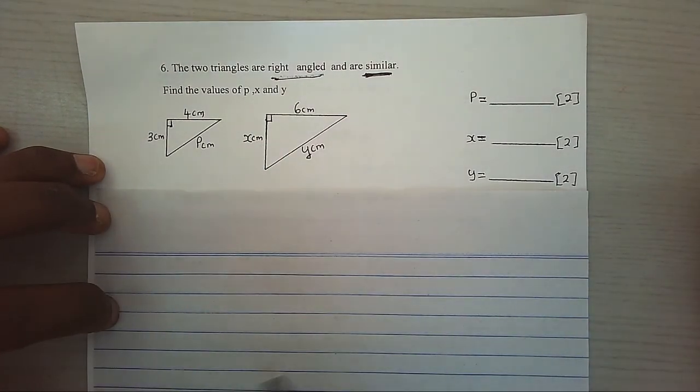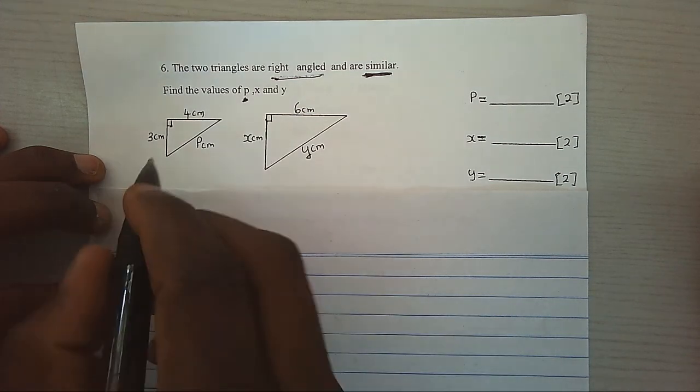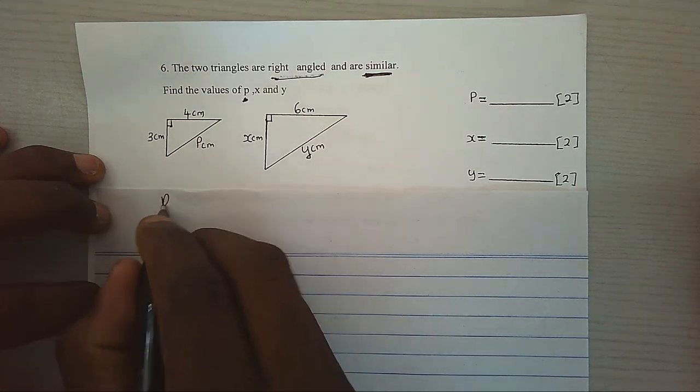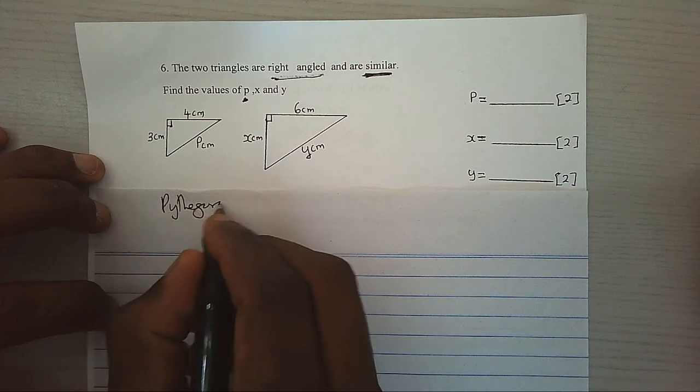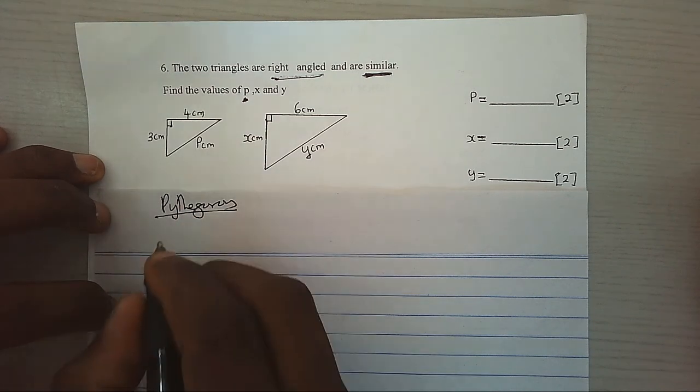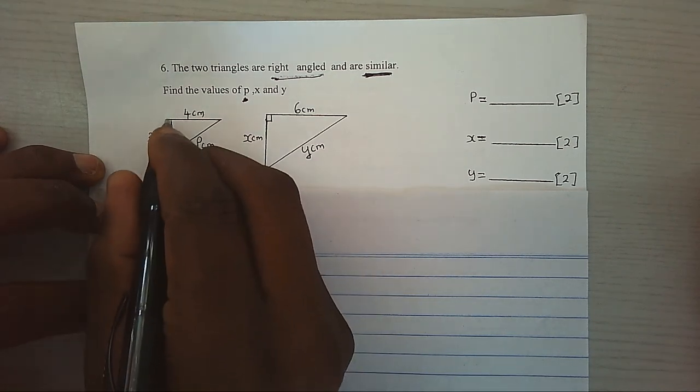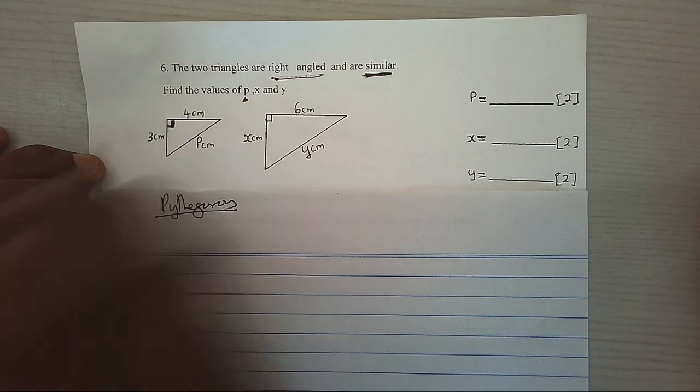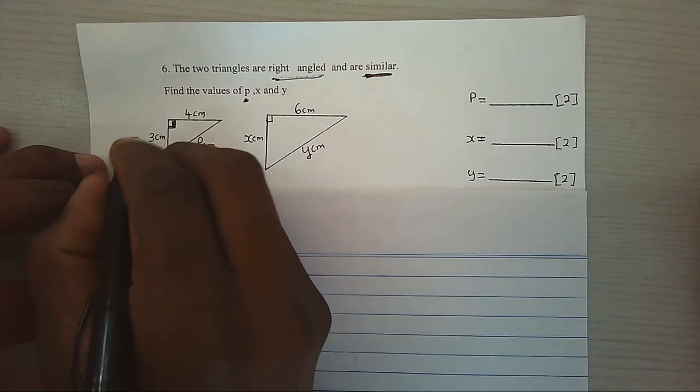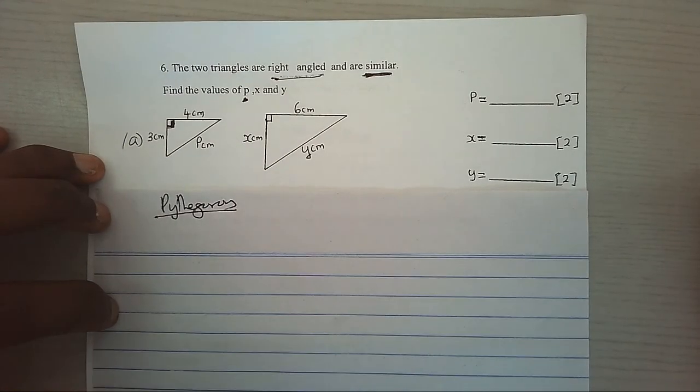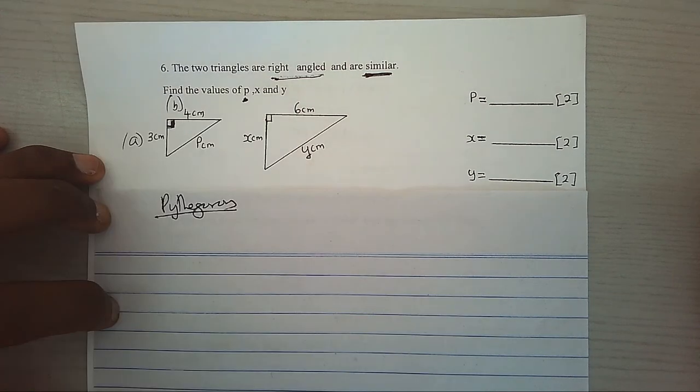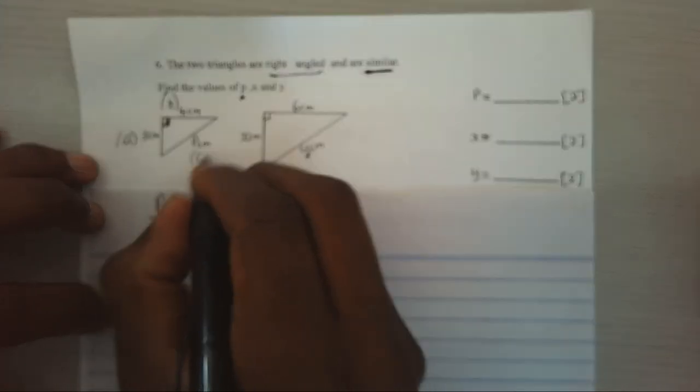Now, to start with, we can find the value of P using Pythagoras. That is, the sides which are meeting the right angles we shall call them A, B. And the hypotenuse, we shall give it C.